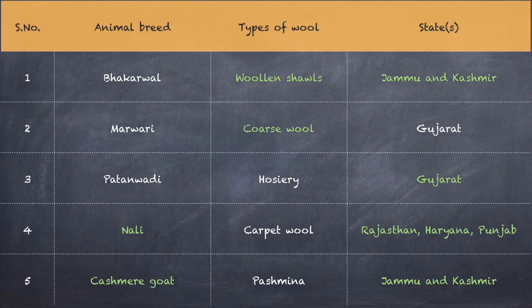Now let's look at this table. Animal breed Bakharwal: type of wool — wool and shawl, state — Jammu and Kashmir. Marwari: type of wool — coarse wool, state — Gujarat. Patanwadi: type of wool — hosiery, state — Gujarat. Nali: type of wool — carpet wool, states — Rajasthan, Haryana and Punjab. Kashmiri goat: type of wool — Pashmina, state — Jammu and Kashmir.